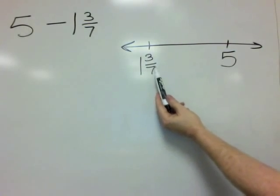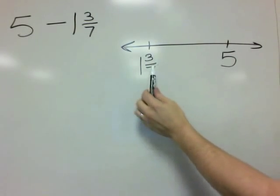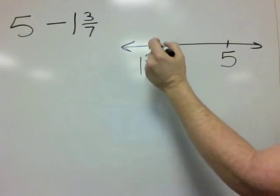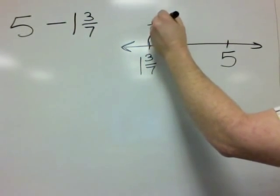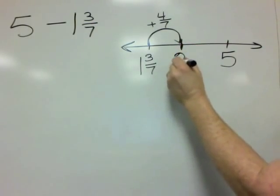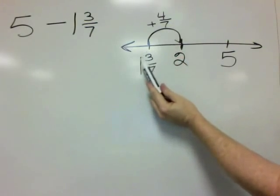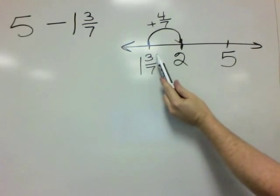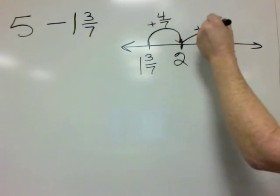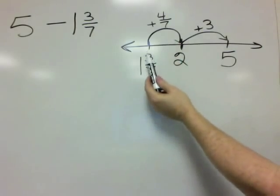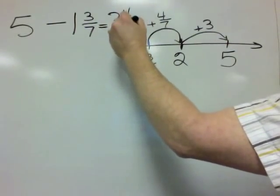We want to figure out what's the distance between these two numbers. This number is a little bit less than 2. So if I add 4 sevenths, that puts us at 2 — because 1 and 3 sevenths plus 4 sevenths gives us 1 and 7 sevenths, which is the same thing as 2. Then how do you get from 2 to 5? We have to add 3. So all told, we've added 3 and 4 sevenths. The answer is 3 and 4 sevenths.